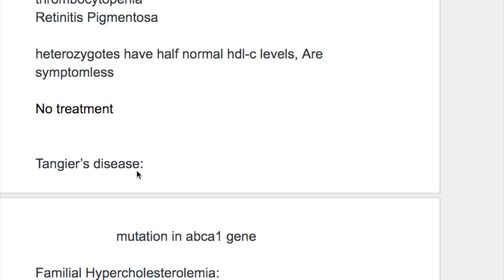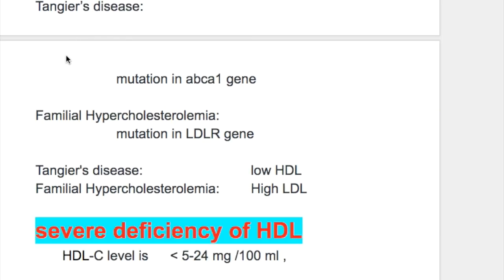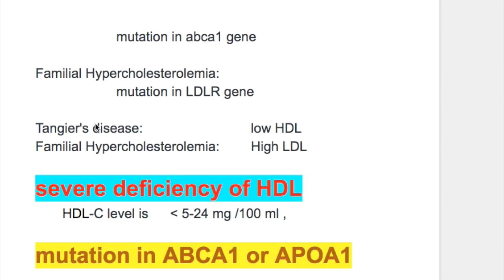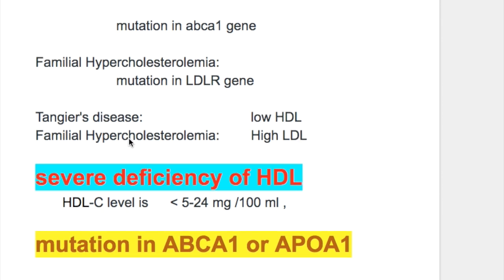The difference between Tangier's disease and familial hypercholesterolemia: in Tangier's disease there is mutation in the ABCA1 gene with low HDL, whereas in familial hypercholesterolemia there is mutation in the LDL receptor genes with high LDL.